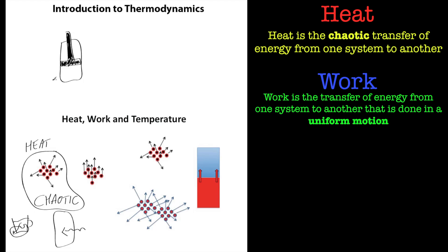Let's say we've got a piston with petrol or gasoline inside. We increase the energy there with heat — random thermal energy, all the molecules move faster. By increasing the heat of the system we can provide work to the surroundings through uniform motion. Increasing the energy in this system causes the piston to move up in one direction — that's a uniform motion. All the piston's metal atoms move in the same direction, and that is work: the transfer of energy that changes the motion of atoms in the surroundings in a uniform manner.